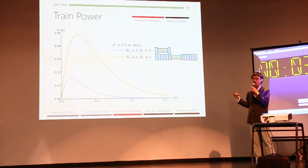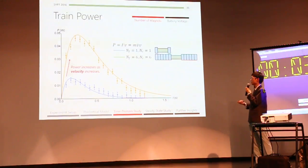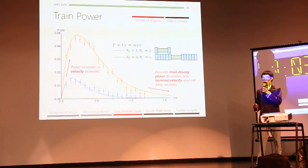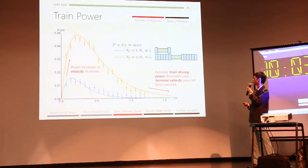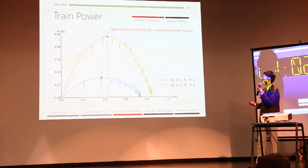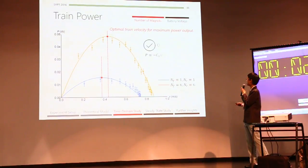Here we see a graph of train power against time. And we see that initially, the train power increases because the speed increases. However, as the train approaches terminal velocity, the net force vanishes, and therefore, power decreases. We note that there's a very clear optimal point where maximum power is achieved. Now, to visualize this clearer, we can plot power against velocity, and we obtain this parabolic plot, which is consistent with our theory. Indeed, we see that as we increase the number of magnets, the power output by our train increases, which is due to the larger driving force involved.